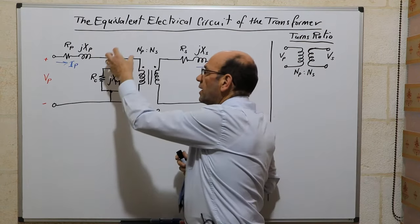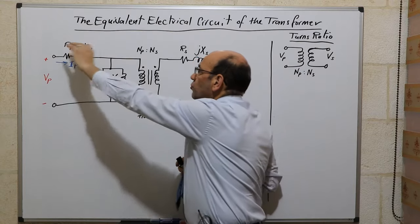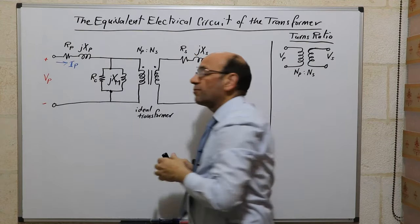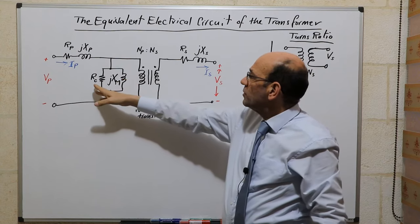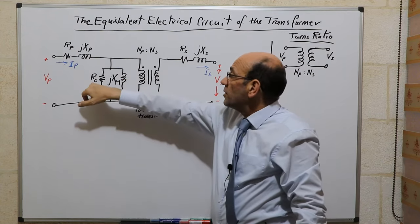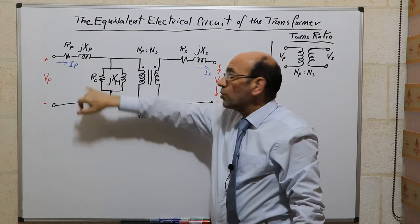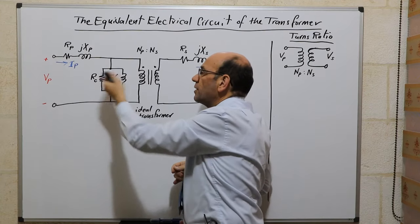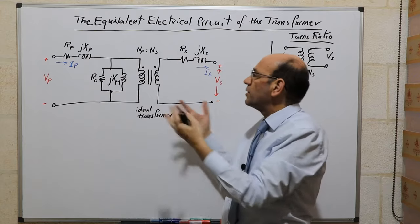We have the series components. We've also allowed for the shunt components, and the shunt components are made of two components which are connected in parallel. R subscript capital C, which is the core losses. These would represent the eddy current losses and the hysteresis losses. They will account for these losses.